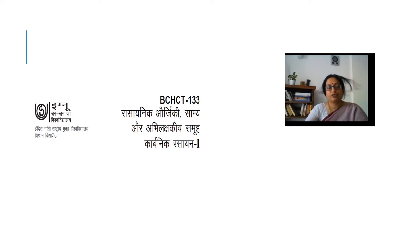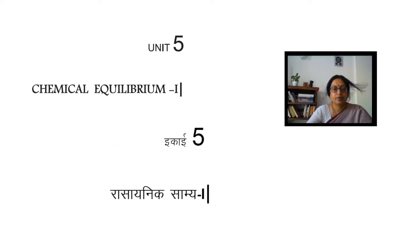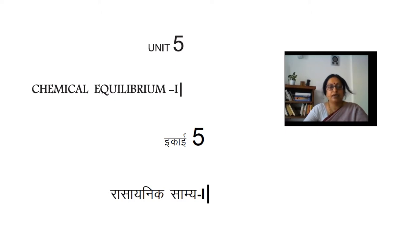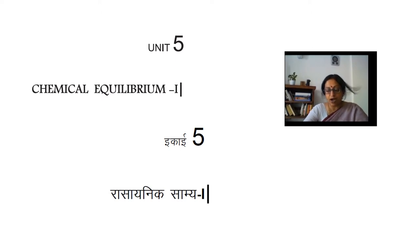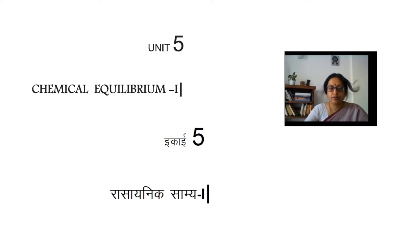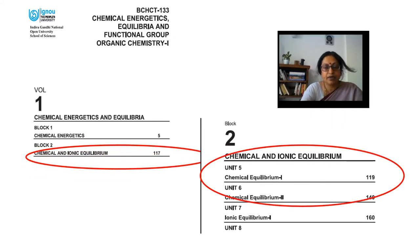I want to talk about both languages — Hindi and English. This is page 119 of the self-learning material, and in Hindi, Unit 5 Rasayanik Samya is on page 127. This Unit 5 in Hindi is in Block 2, Chemical and Ionic Equilibrium, as I said, page 117.